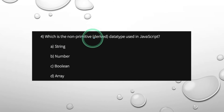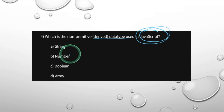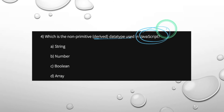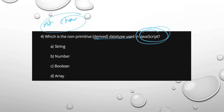Which is the non-primitive derived data type in JavaScript? The options are string, number, boolean, and array. String, number, and boolean are primitive data types in JavaScript, while array is a derived data type.